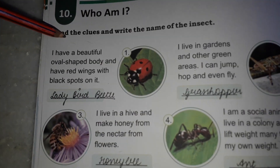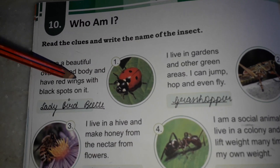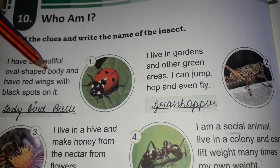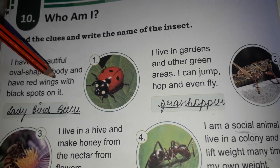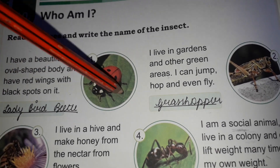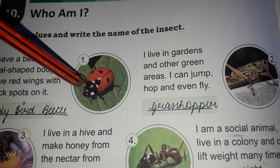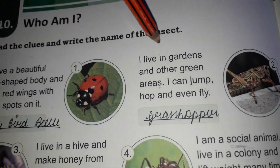On the last page, some information and pictures are given. You have to write the name of the insect based on the given information. For example: I have a beautiful oval-shaped body and have red wings with black spots on it — the red wings and black spots. That is called a ladybird beetle.